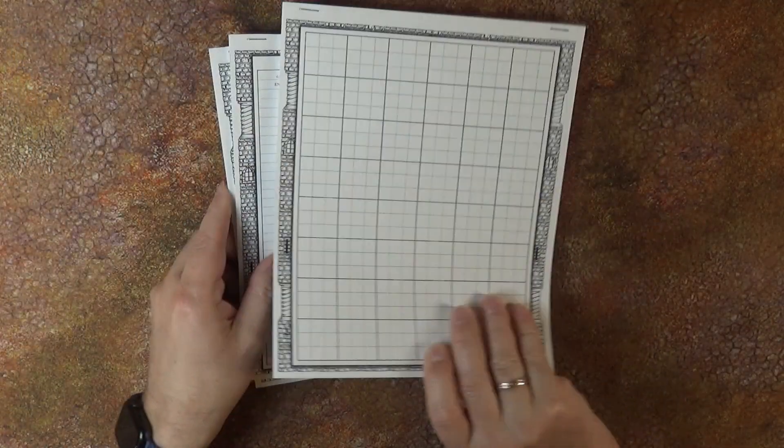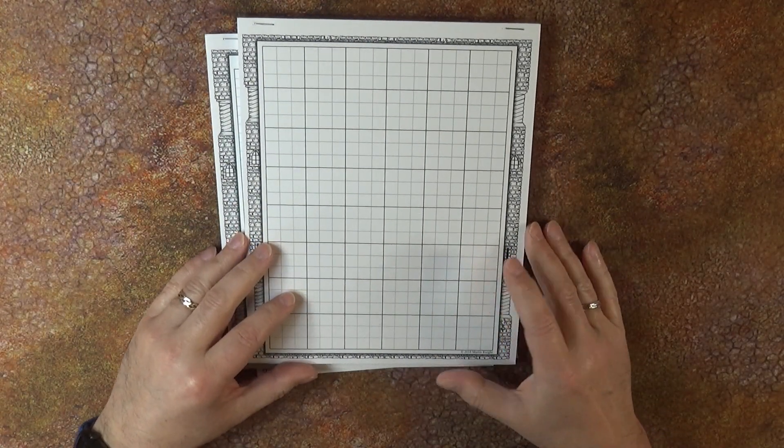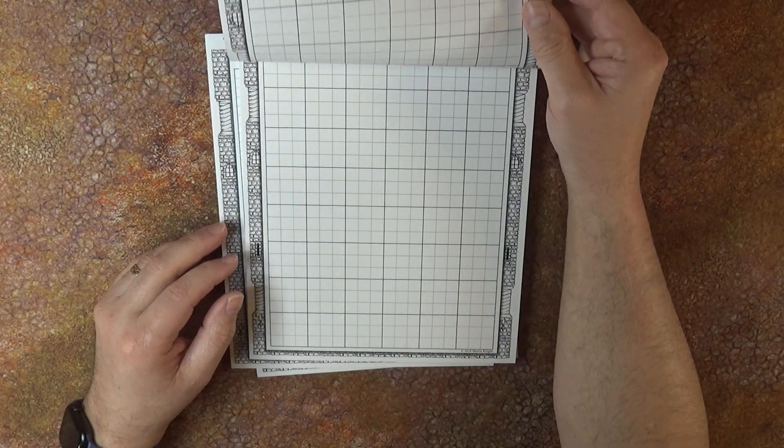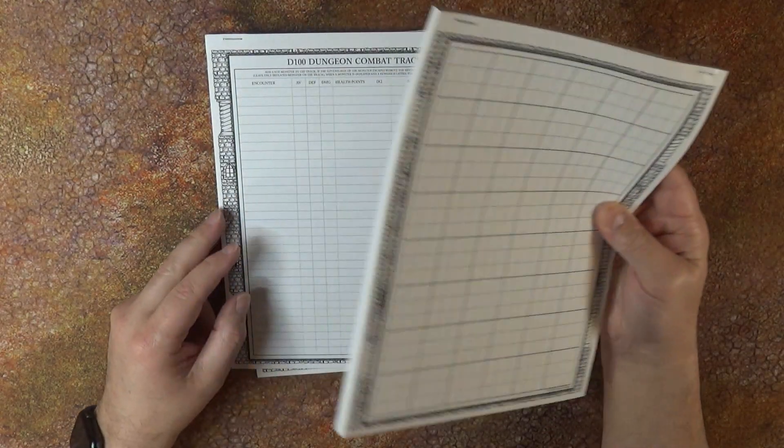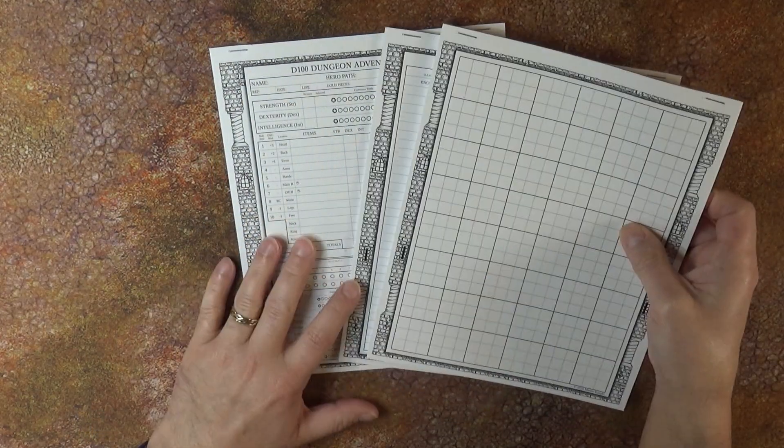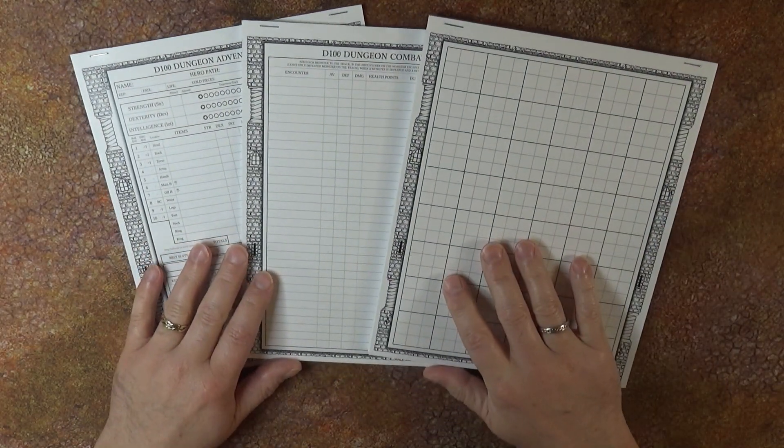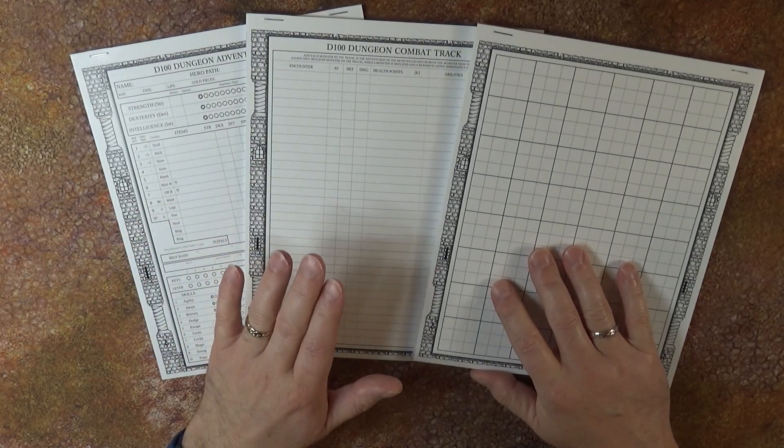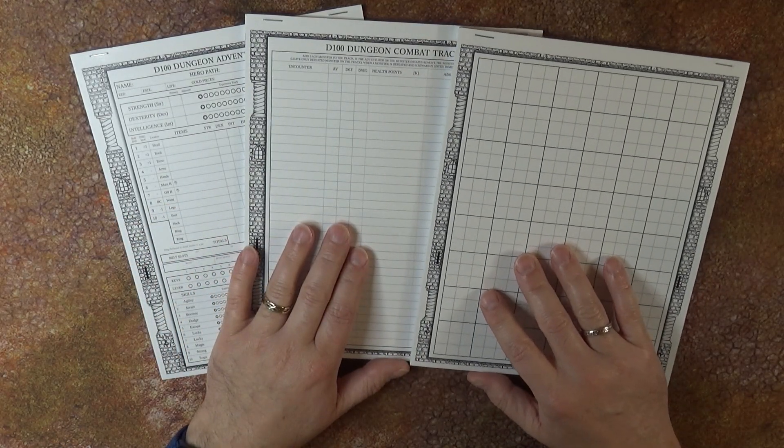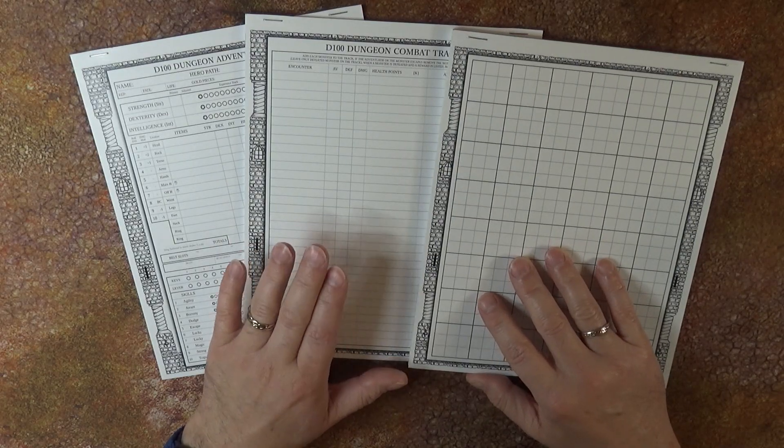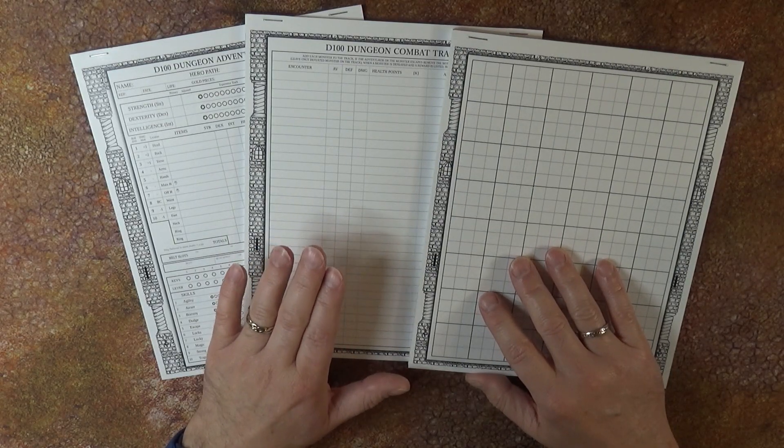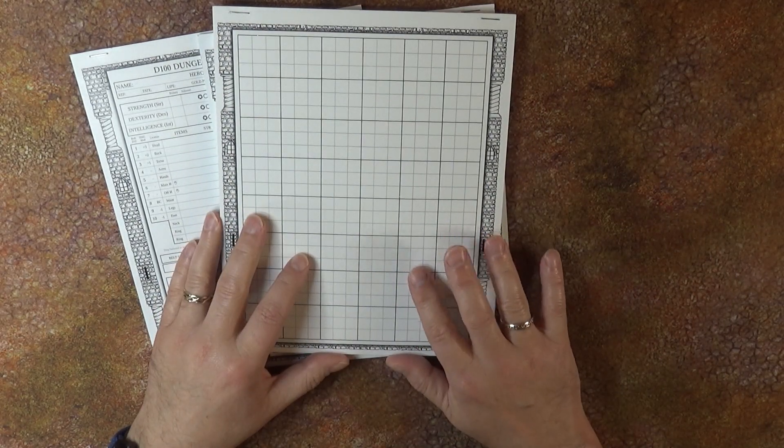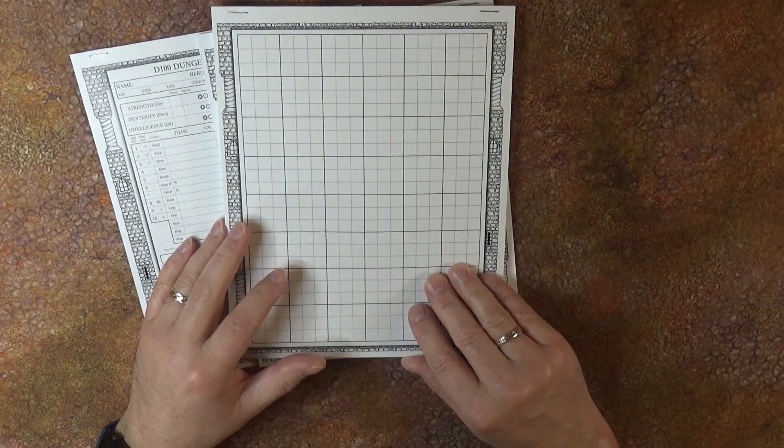And 50 of these dungeon sheets that you can use for your dungeons. They're also double-sided, so in effect you'll end up with 100 of them. So the entire pack will include 20 adventure sheets, 20 combat track sheets double-sided making them a pack of 40, and 50 dungeon sheets double-sided, so in effect 100.